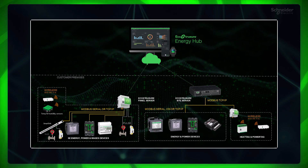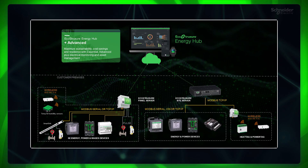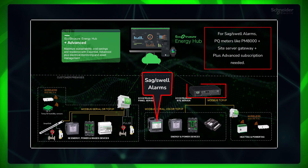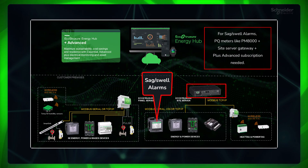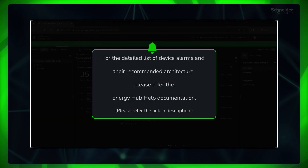To utilize most device alarms, except for PowerTag Energy and ambient, your organization needs a Plus Advanced subscription. Additionally, the availability of these alarms depends on specific devices and gateways at the site. For the detailed list of device alarms and their recommended architecture, please refer to the Energy Hub help documentation.